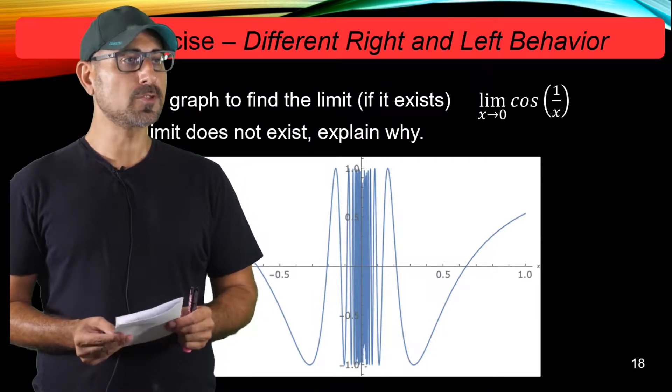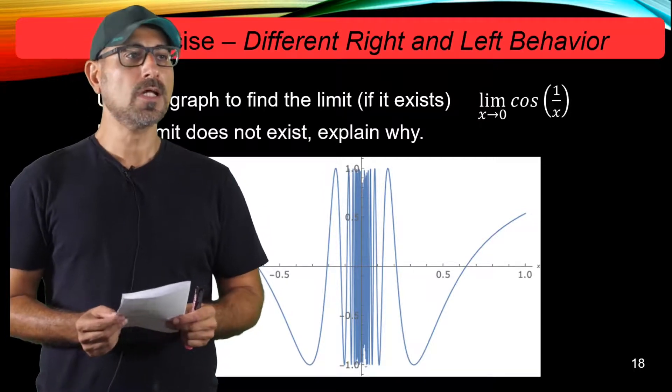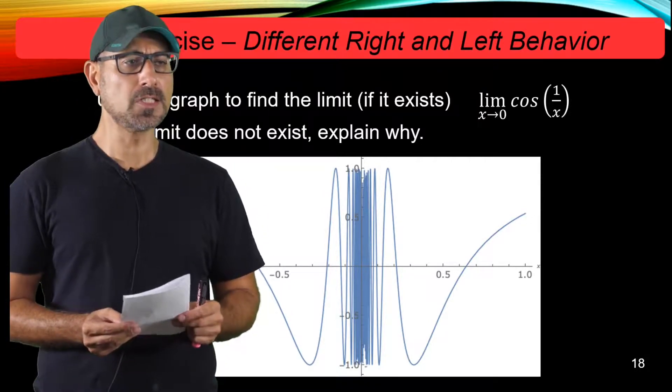And we're talking about the function cosine 1 over x, that's a trig function, and the limit point is 0.